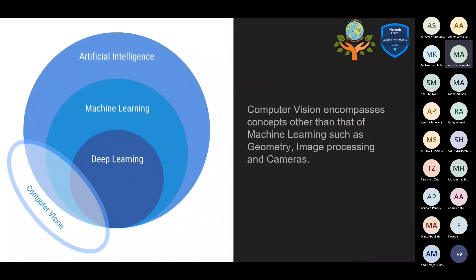Moving on — everyone thinks that computer vision is a subset of machine learning and deep learning, but I also want you to know that computer vision is more than that. It also involves cameras, geometry, image processing, etc. So it is a subset, but it also has other things, and this graph demonstrates a good representation of how it is. Is there anyone who has worked with computer vision projects? First and second year students, please feel free to speak up. That's okay — you can all learn today what it is.